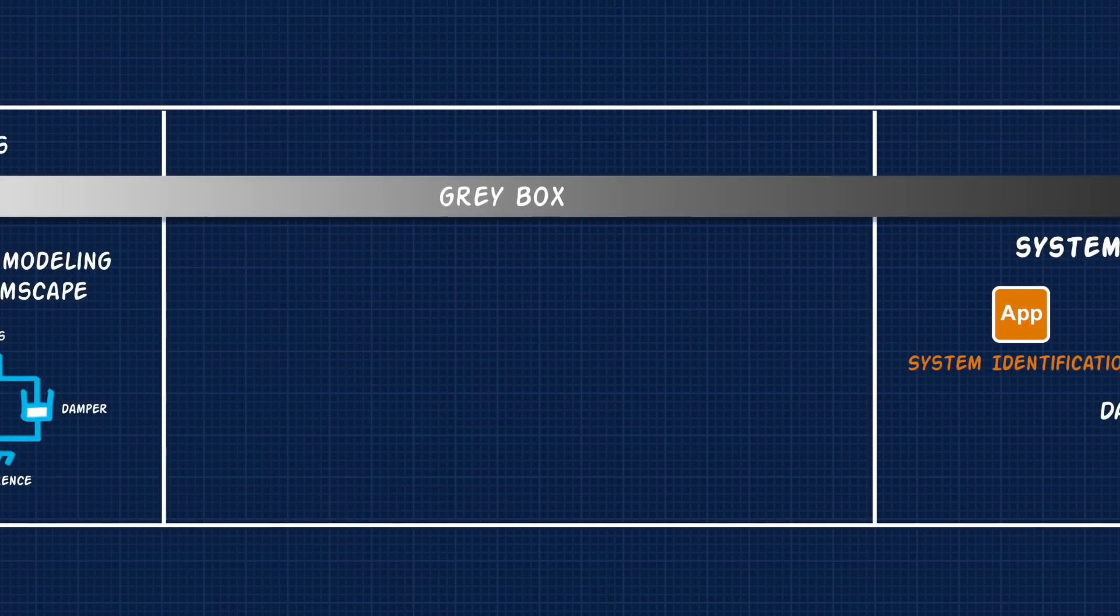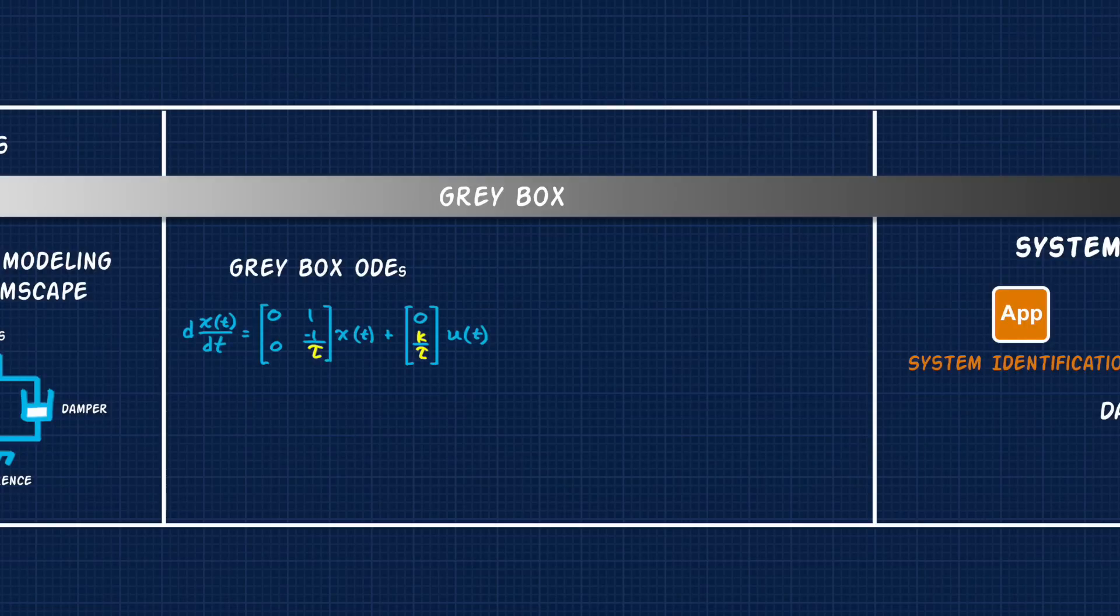In between the black box and the white box methods is what we call gray box modeling, which is where you use some physical knowledge of the system to create the model, and then you learn the rest with data. For example, if you're trying to model an electric motor, you might choose an ordinary differential equation for a generic motor, and then use data to learn the specific parameters for your motor.